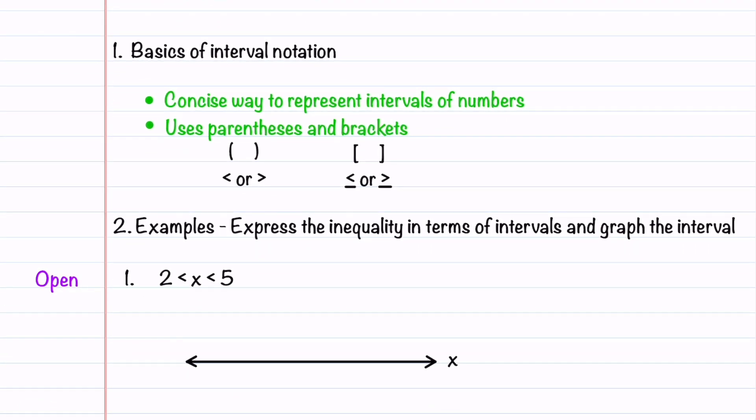Let's start by going over a few basics of interval notation. Interval notation is just a concise way to represent intervals of numbers. It uses parentheses and brackets. Parentheses are used when you have a less than or greater than symbol, and brackets are used when you have a less than or equal to or greater than or equal to symbol.